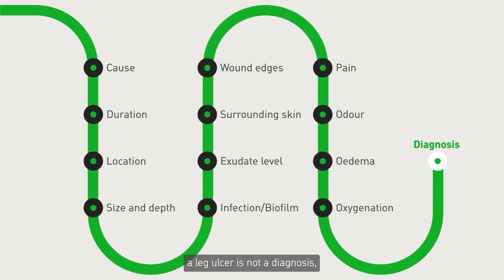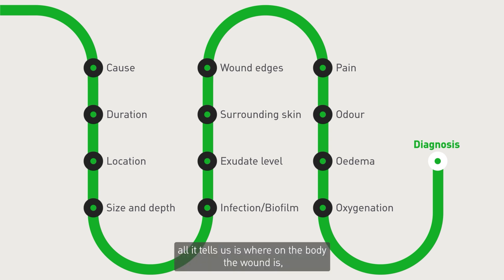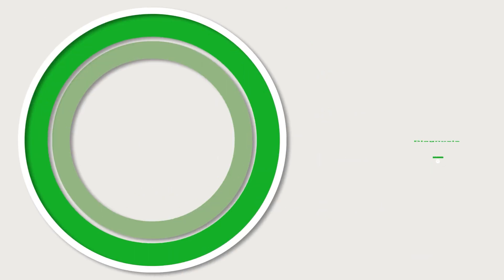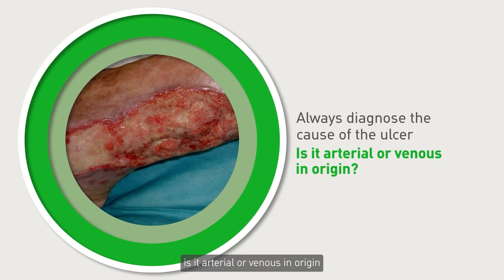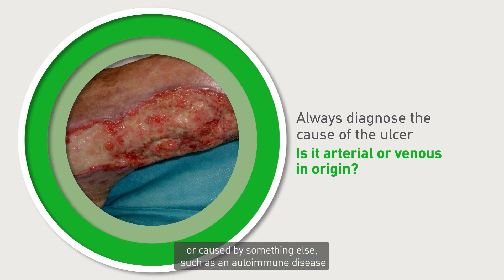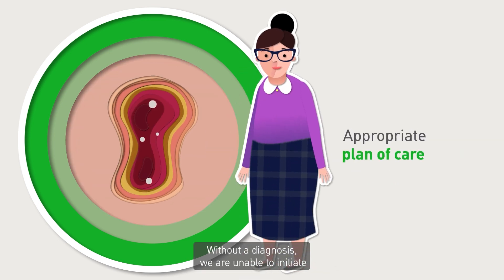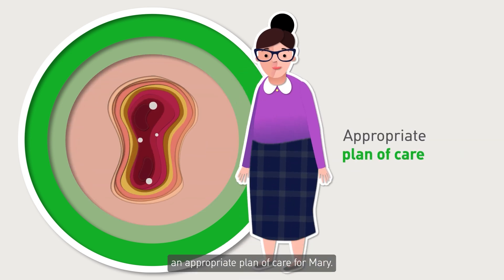A leg ulcer is not a diagnosis; all it tells us is where on the body the wound is. What we need to decide is the cause of the ulcer. Is it arterial or venous in origin, or caused by something else such as an autoimmune disease, for example pyoderma gangrenosum? Without a diagnosis we are unable to initiate an appropriate plan of care for Mary.